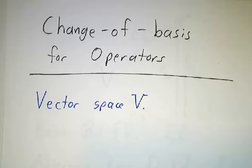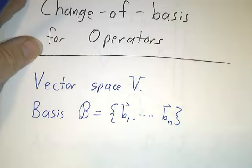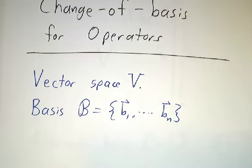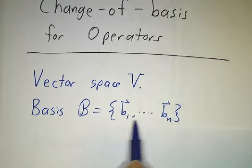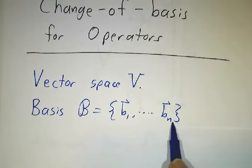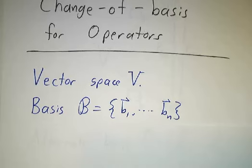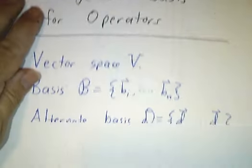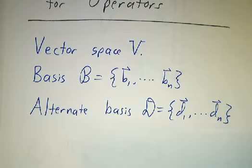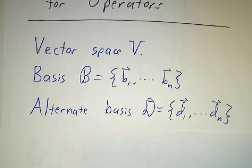We always have a vector space V, and we'll assume it's a finite dimensional vector space, so it's n-dimensional and it has a basis b1 through bn consisting of n vectors. And then you have another basis, d1 through dn. And you want to know how to convert from doing things with the b basis to doing things with the d basis or vice versa.